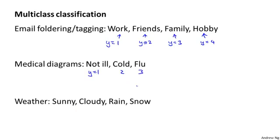And the third and final example, if you are using machine learning to classify the weather, maybe you want to decide that the weather is sunny, cloudy, rainy, or snow.